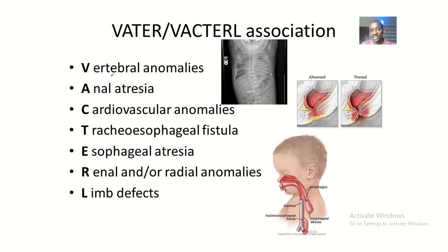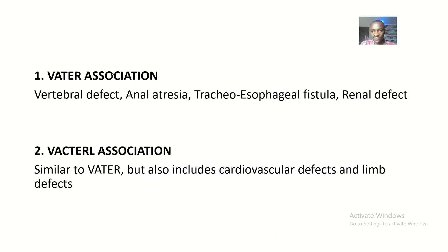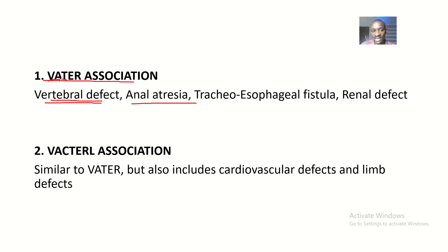So the VATER association is a collection of different defects. This V stands for vertebral defects, the A stands for anal atresia, the T and E stand for tracheoesophageal fistula, and the R stands for renal defect.